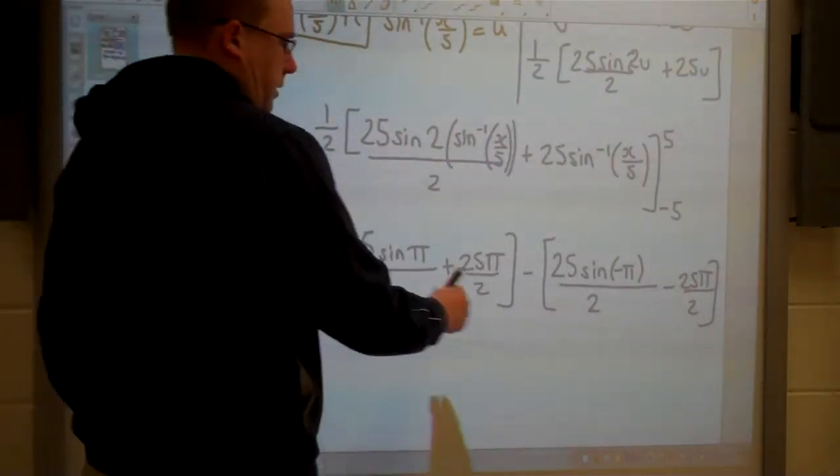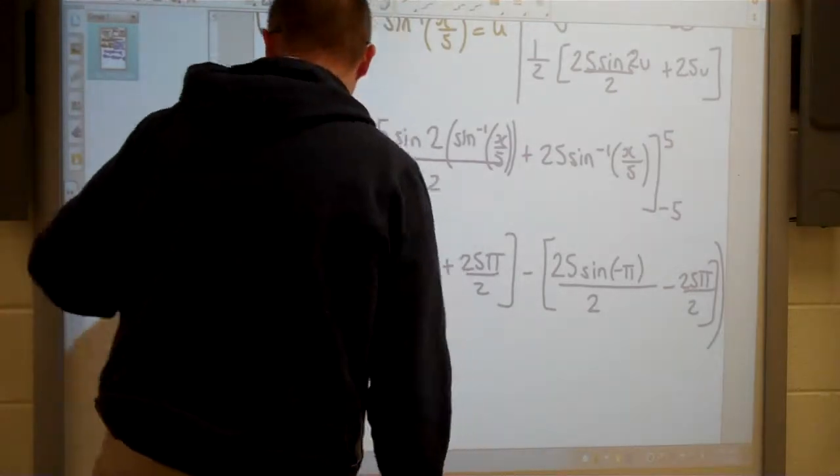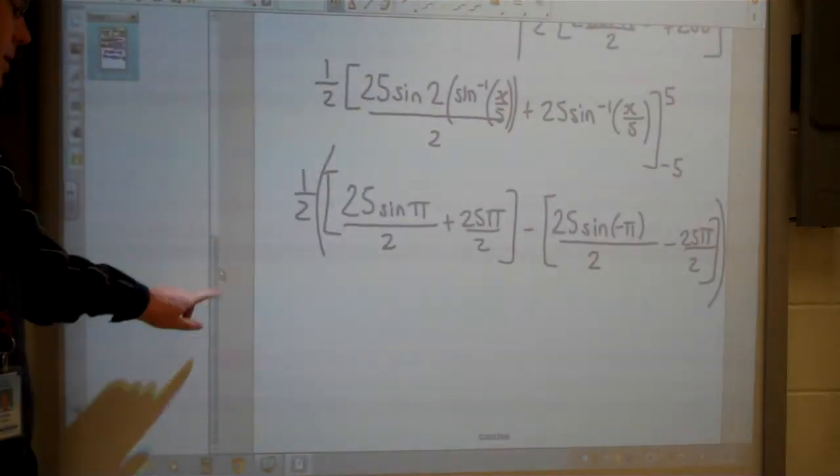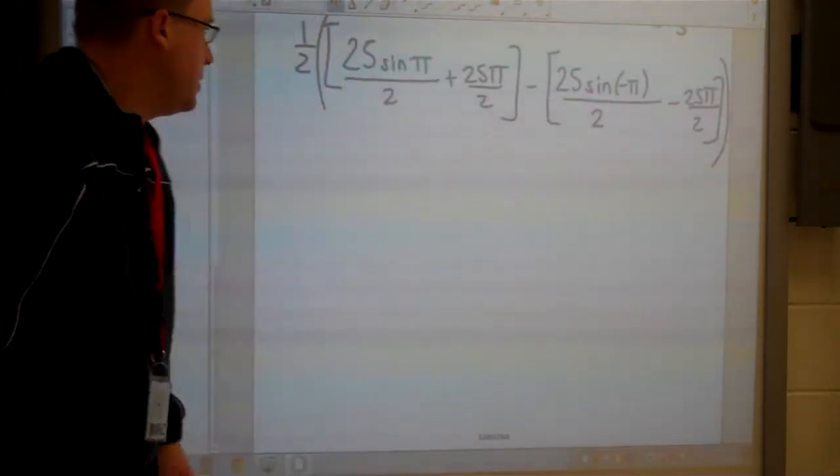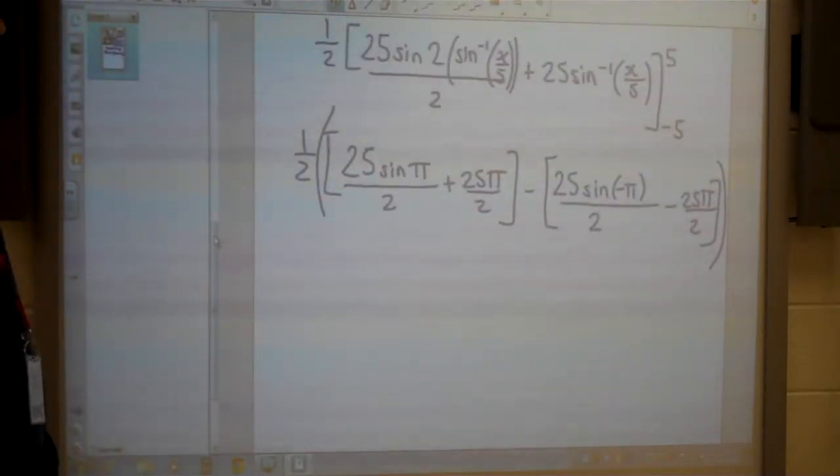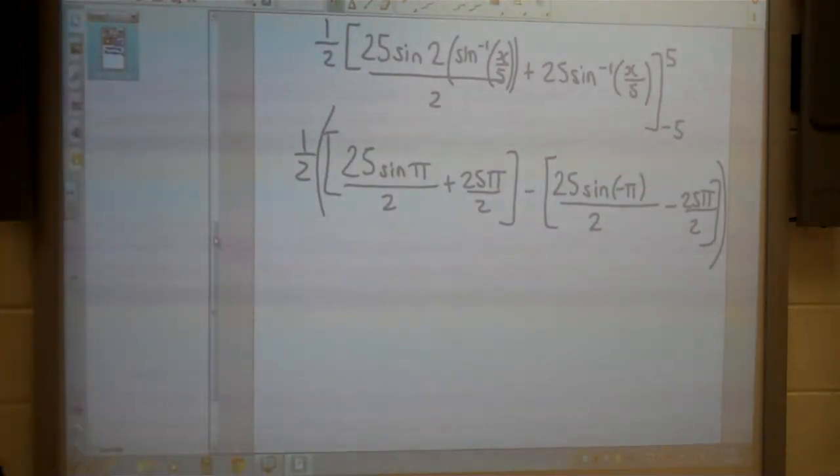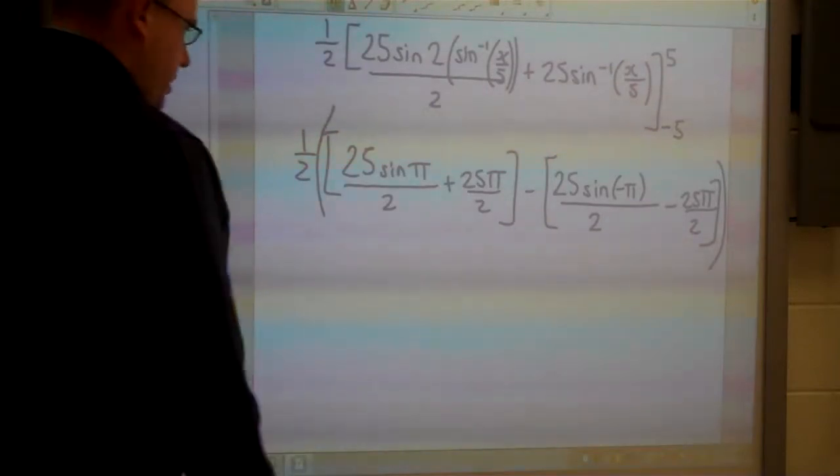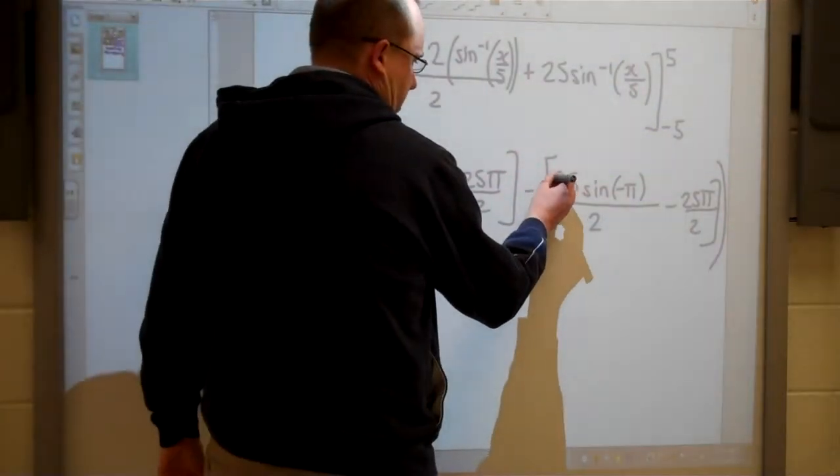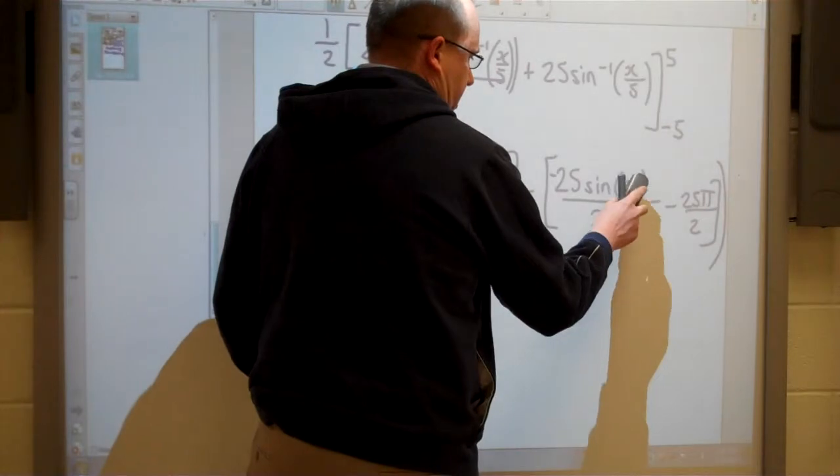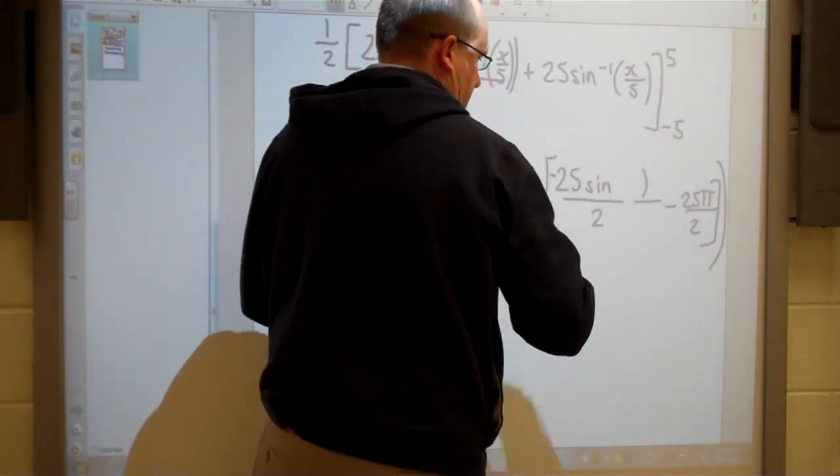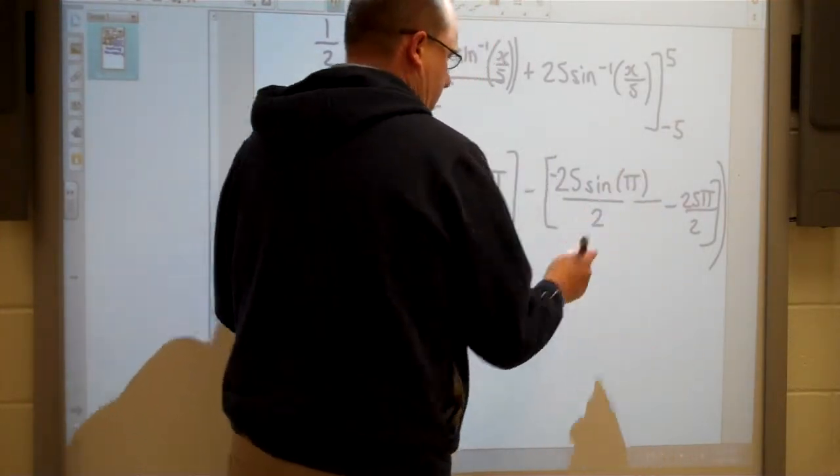And we've still got to remember this half at the start of the question as well. So we've got a little bit of organization skills to be on this question just to make sure we don't make any silly mistakes. Some simplifying we can do now. Well, sine of negative pi - I could use the fact that sine is an odd function. Then the sine of negative pi is the same as negative sine of pi. So I could change that straight away. And the reason I want to do that is I would then have some like terms that I could collect together.